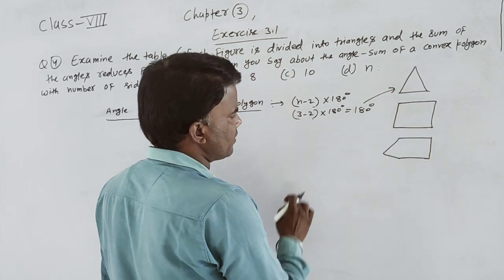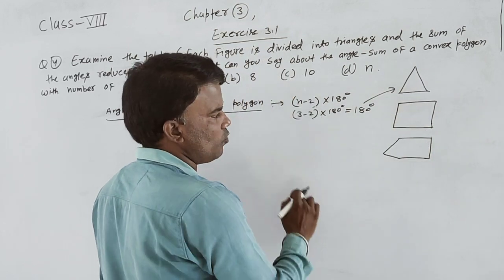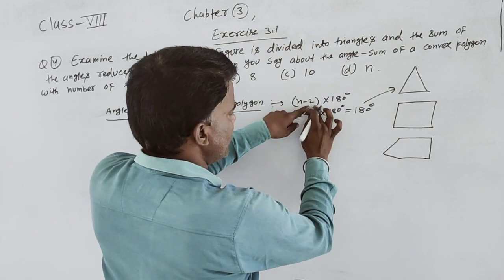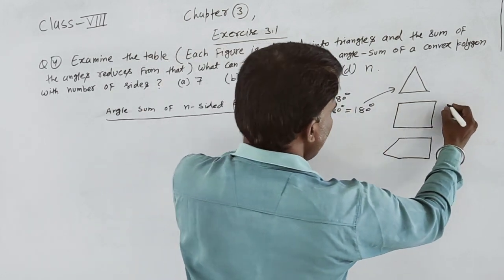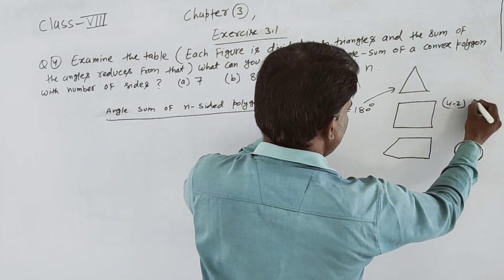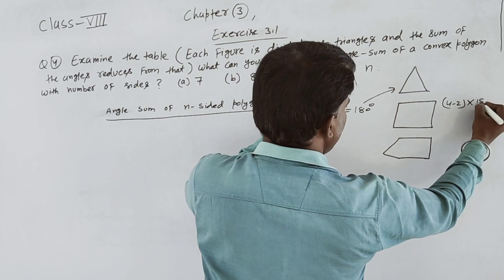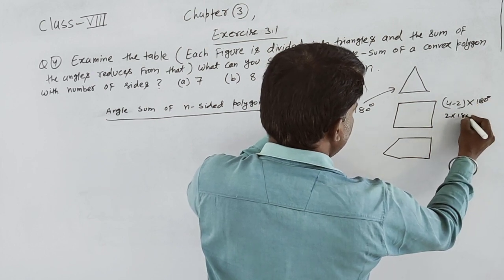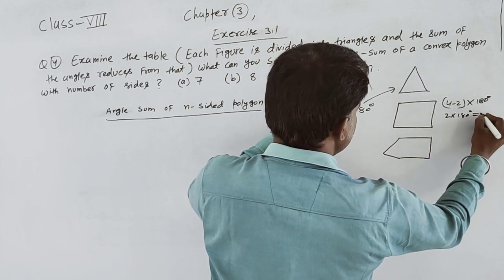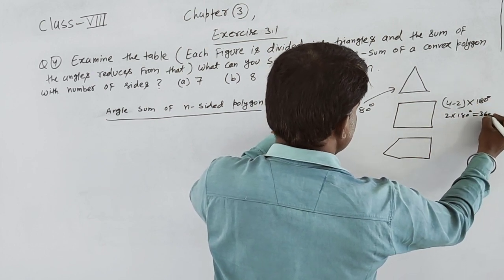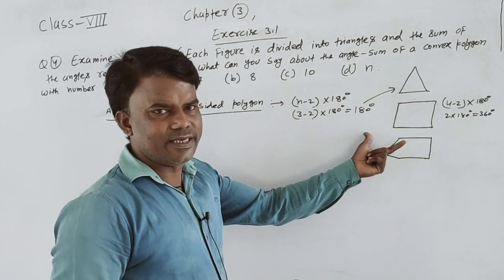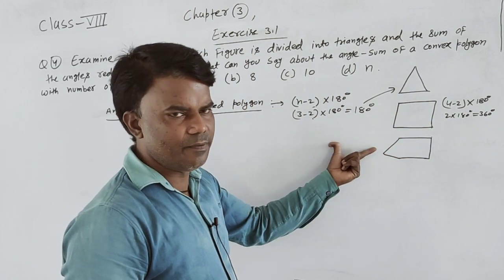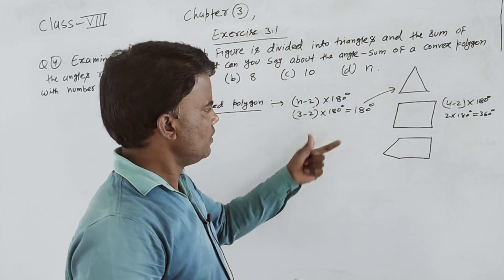Quadrilateral की बात करते हैं, तो N की value 4 हो जाएगी। So it means 4 minus 2, multiply 180: 2 multiply 180, it means 360 degrees. हमारे पास find हो जाता है। ऐसे यह different values वाला given table भी question में given है।